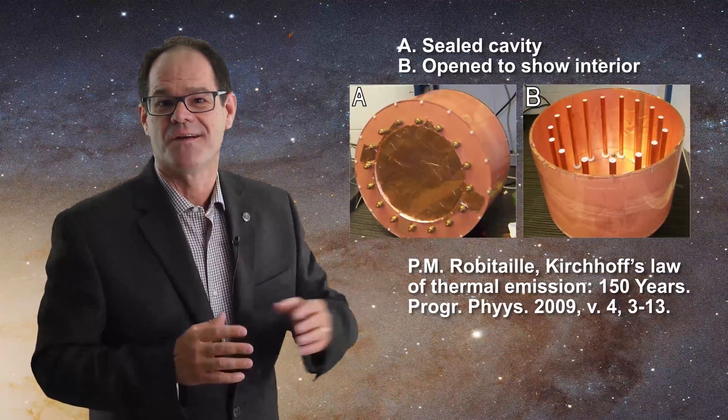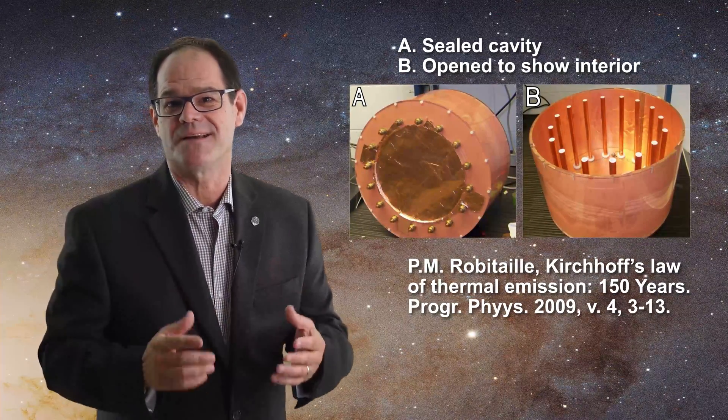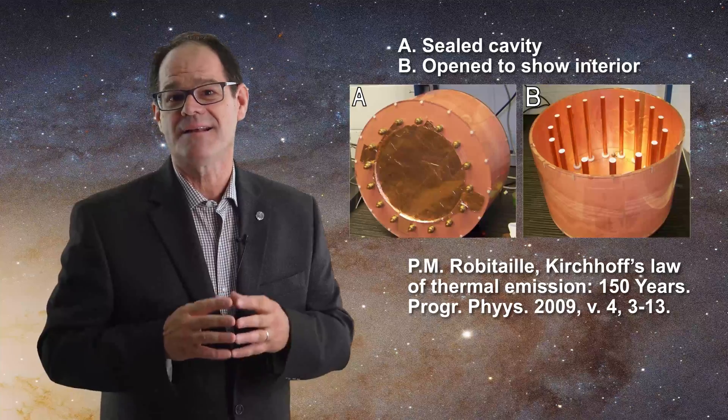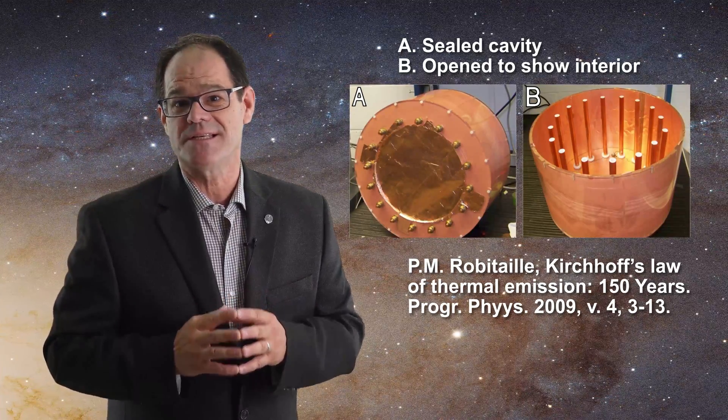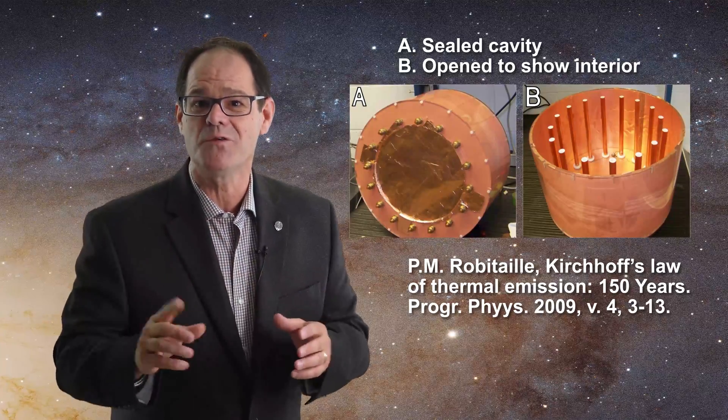The first ultra high field MRI coils acted as resonant cavities. An example of such a coil was a completely enclosed cavity as shown in this figure. This coil was resonant, not black.